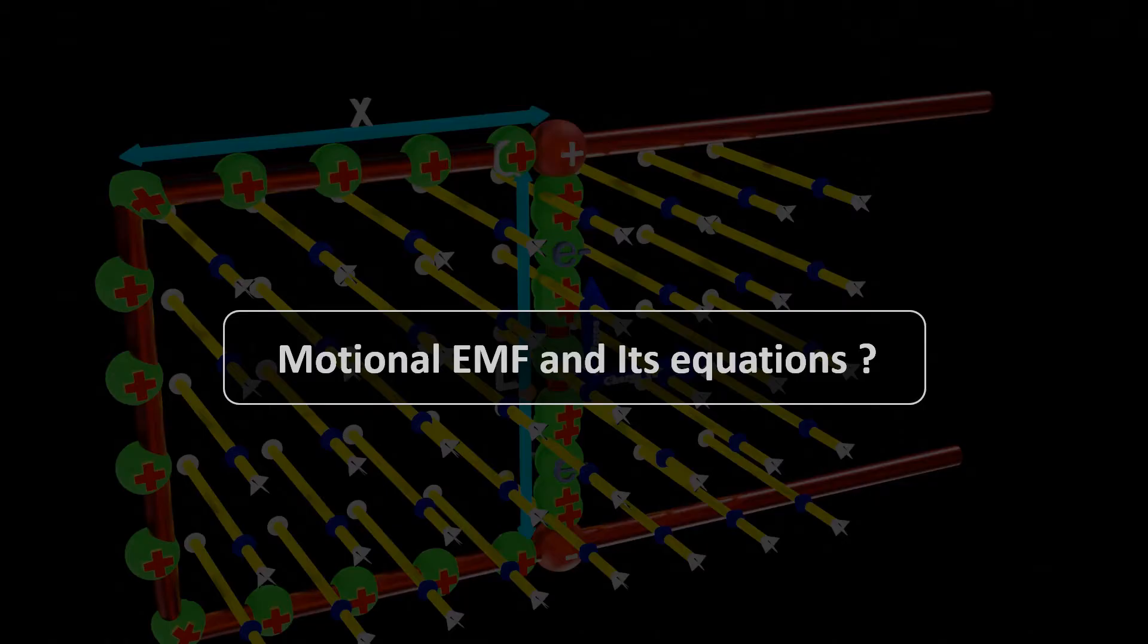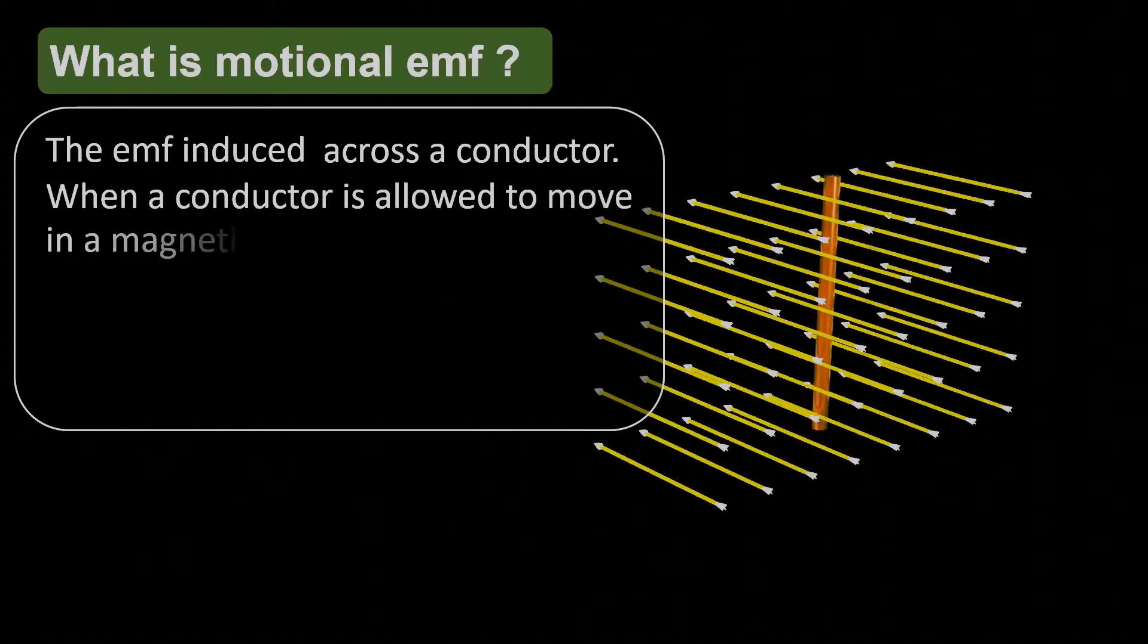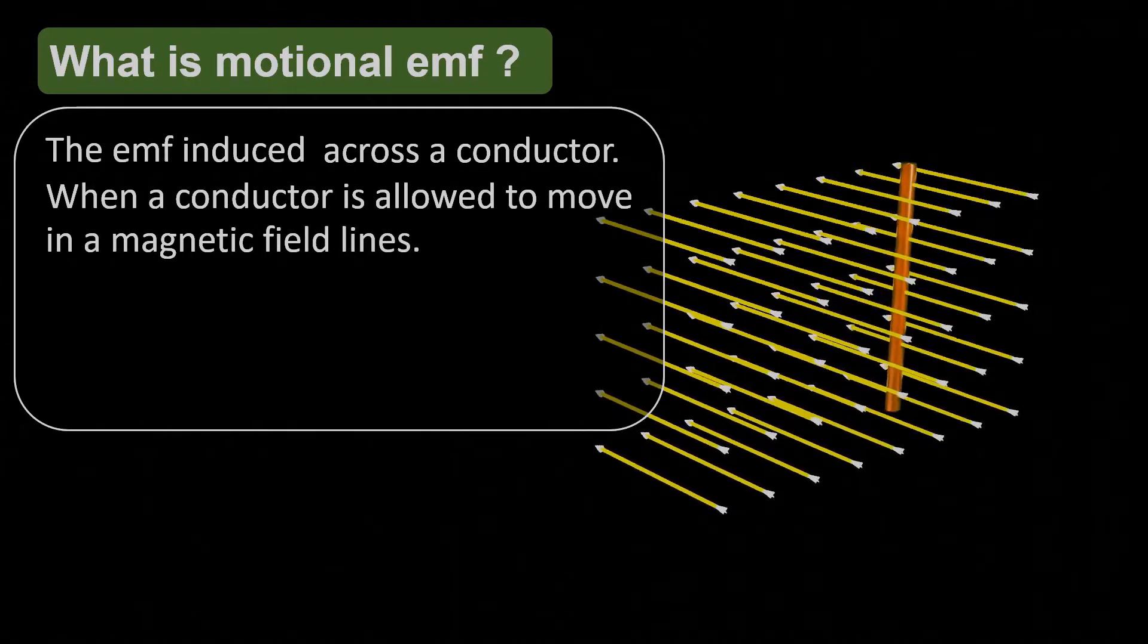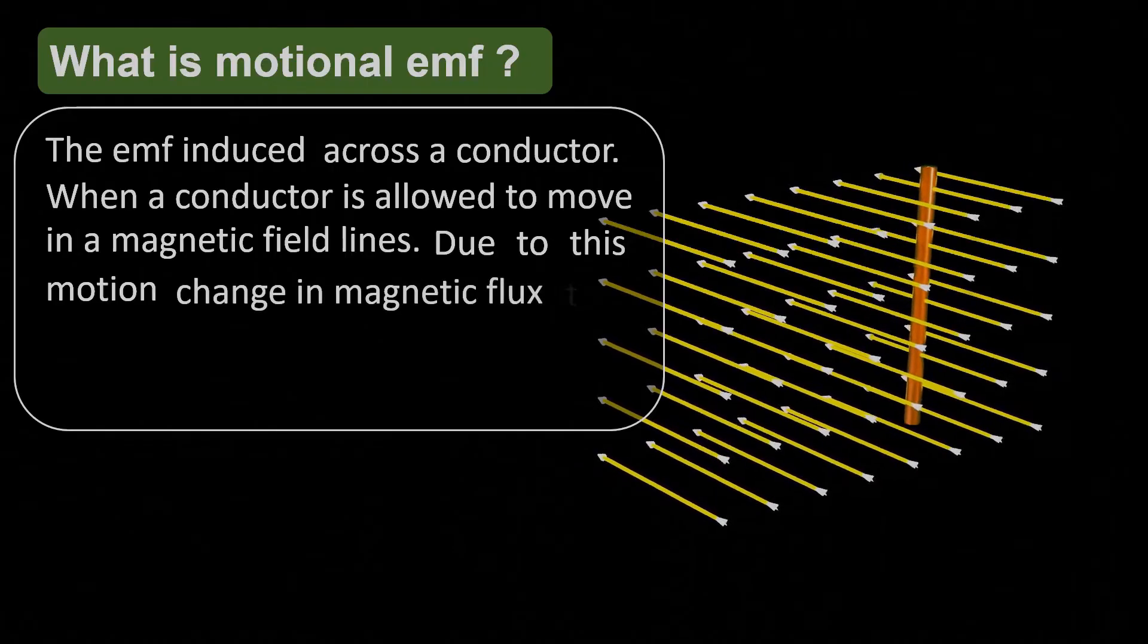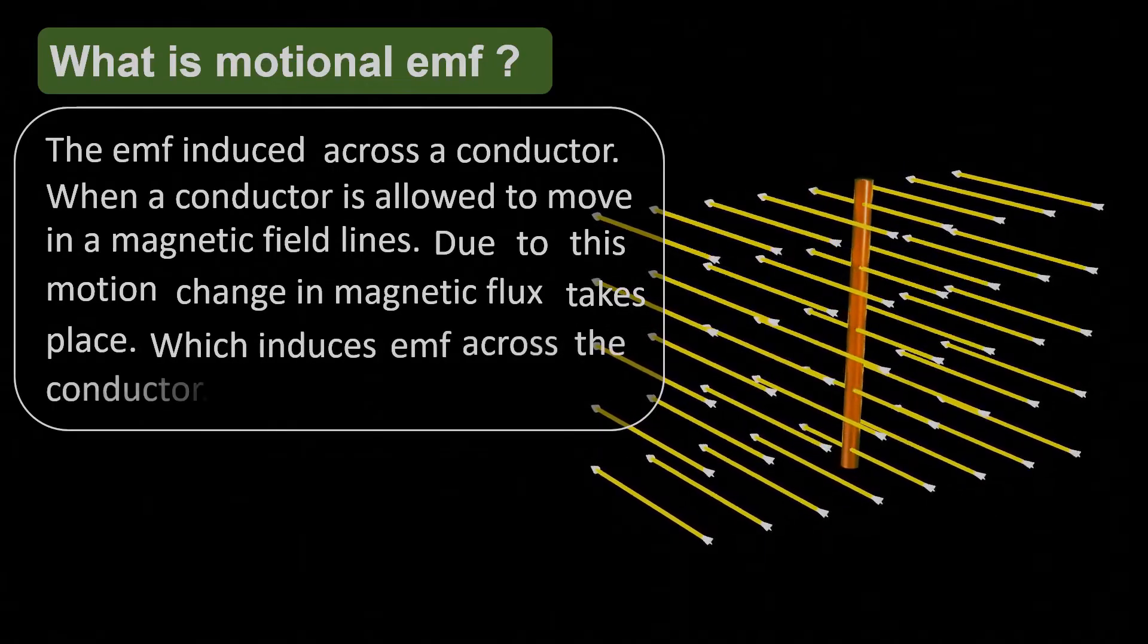Let's start with the basic definition of Motional EMF. What is Motional EMF? Motional EMF is simply the EMF induced across a conductor when a conductor is allowed to move in magnetic field lines. Due to this motion, change in magnetic flux takes place, which induces EMF across the conductor.